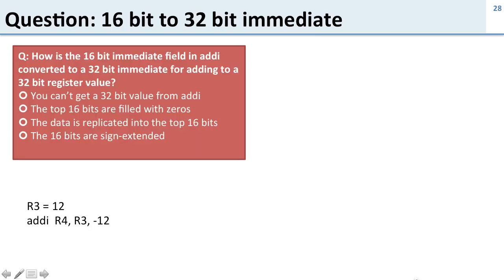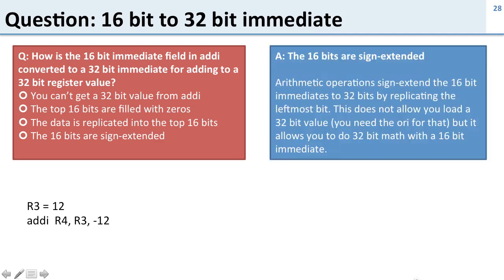Question: How is the 16-bit immediate field in the addi instruction converted to a 32-bit immediate for adding to the 32-bit register value? The answer is the 16-bits are sign-extended. Arithmetic operations have their 16-bit constants sign-extended.